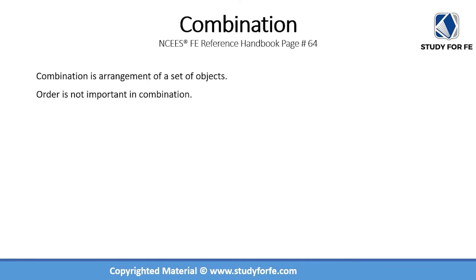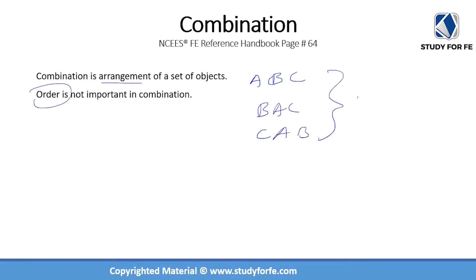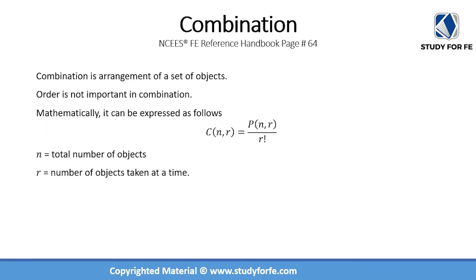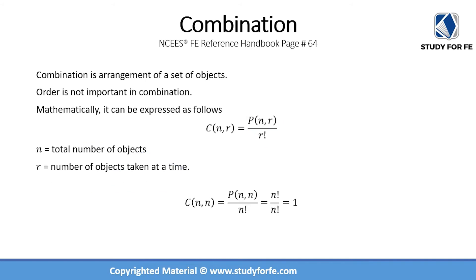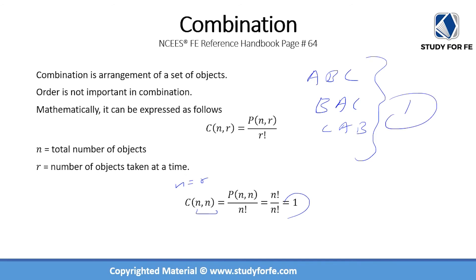Now that you understand permutation, understanding combination should be straightforward. Combination is also an arrangement of a set of objects, but in the case of combination order is not important. So ABC is the same as BAC and the same as CAB — all of these count as just one combination. Mathematically, you calculate combinations by dividing the permutation by r factorial. If you are taking all objects at a time where n equals r, there is only one combination.